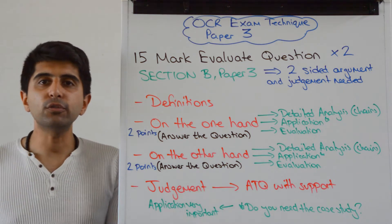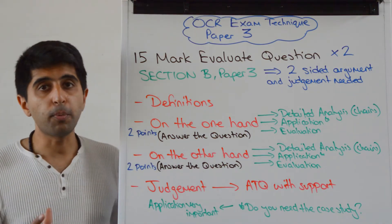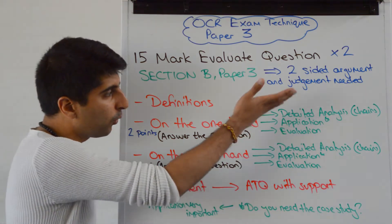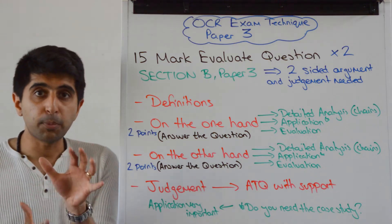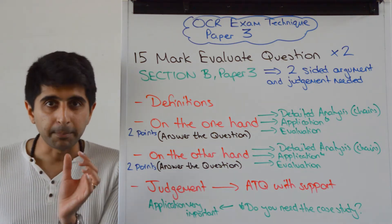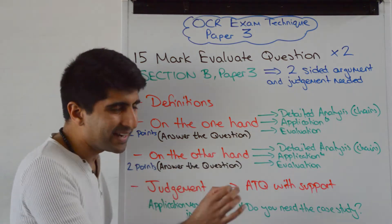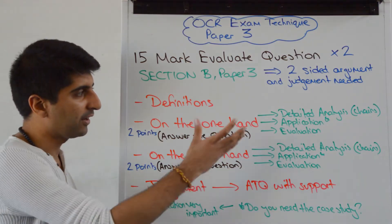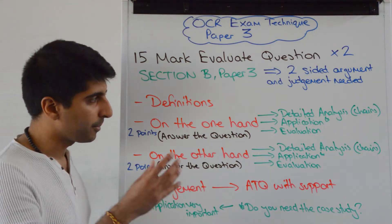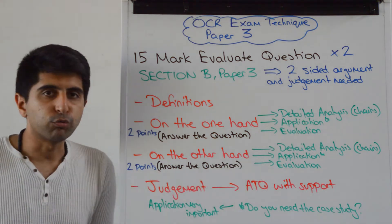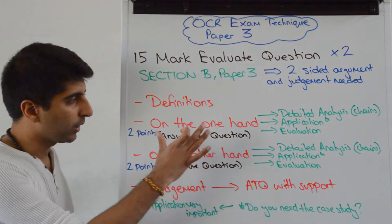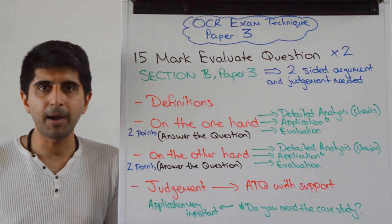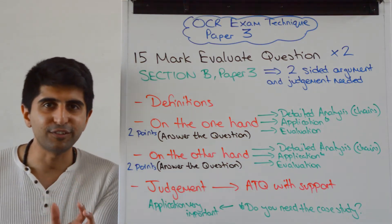Then go straight into answering the question on the one hand. You want to make two points on the one hand, and those points must be answering the question nicely. You're looking to write nice, solid paragraphs for each point you're making. Watch my video on how to write the perfect economics paragraph. What you're looking to do, very basically, is to write your theory in serious detail — whatever point you're making, write that theory in loads of detail. Pretend the examiner marking it is a non-economist, forcing you to write in serious detail.